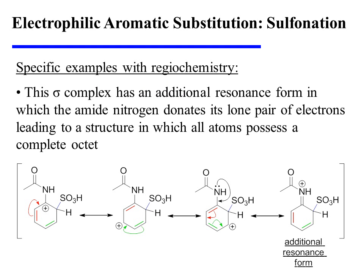This sigma complex has the expected three resonance forms that delocalize the charge around the ring. But importantly, this sigma complex has one additional resonance form in which the amide nitrogen donates its lone pair of electrons into the ring.